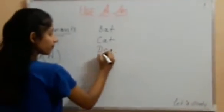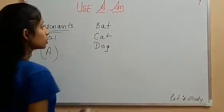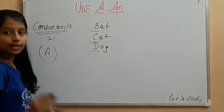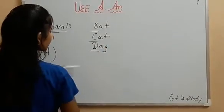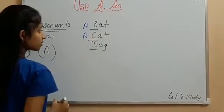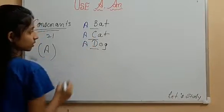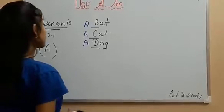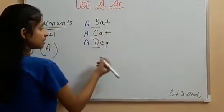D, a dog. So these are all our consonants: B, C, D. These are all our consonants. So we will say a bat, a cat, a dog. The consonants are like B, C, D.